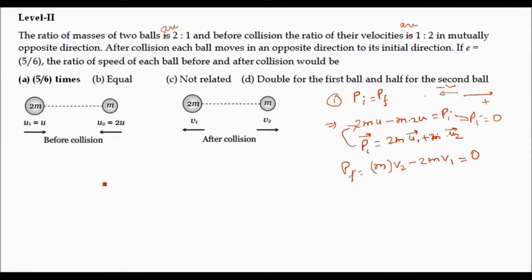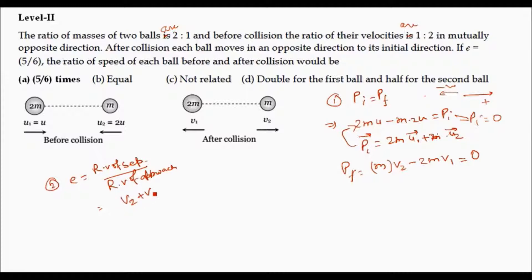The second equation uses the coefficient of restitution: E equals relative velocity of separation divided by relative velocity of approach. Since both bodies are moving in opposite directions before and after collision, the relative velocity of separation equals V2 plus V1, and the relative velocity of approach equals U plus 2U. So we get: (V2 + V1) / (U + 2U) = 5/6. This is equation 2, and the momentum result is equation 1.